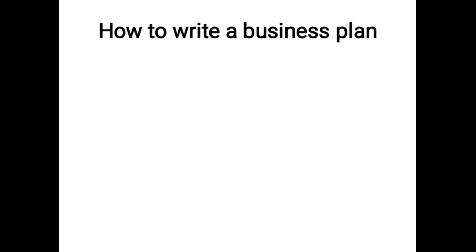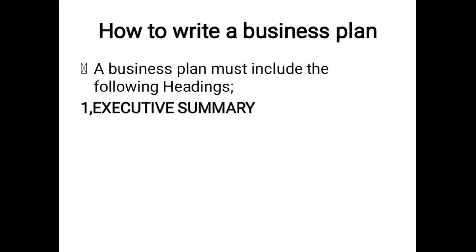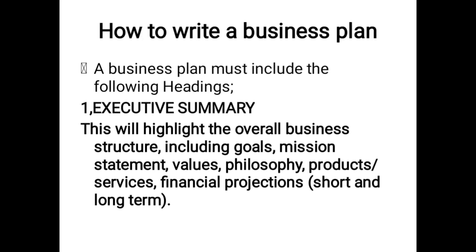The next question asks you to discuss the steps involved in a business plan. The first step is an executive summary, which includes the overall business structure such as the organogram and hierarchy, the goals of the organization, mission statement, philosophy, values, products and services offered, and financial projections both short-term and long-term. If your business has been in existence, you can include past losses and gains and reasons for them.